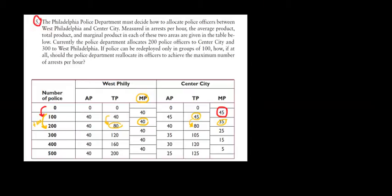Going from 200 to 300 officers: increasing by another hundred, the total arrests in West Philly becomes 120, up from 80 — an additional increase of 40 arrests. In Center City, total arrests increase from 80 to 105, an additional increase of only 25. West Philly is much more productive here, so we allocate the next hundred police officers to West Philly.